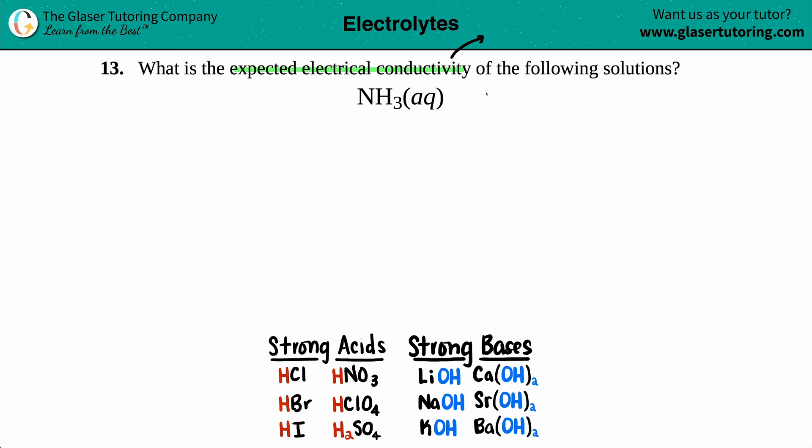Now, if something is electrically conductive, that means that you see ions in the solution. Now, ions just mean that you have, you know, either positives or negatives in solution.